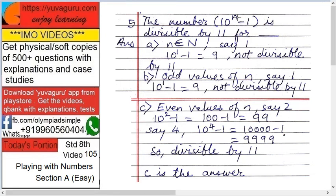Third is even values of n. Even means 10 raised to 2, 4, 6, 8. Let's try with the simpler one, 10 raised to 2. So 10 raised to 2 is 100, 100 minus 1 equals 99. That is divisible by 11, yes! Now let's try with another number.